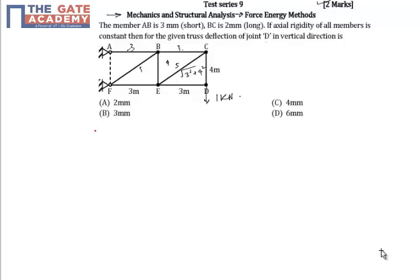It is given delta AB is minus 3 mm, delta BC is plus 2 mm.